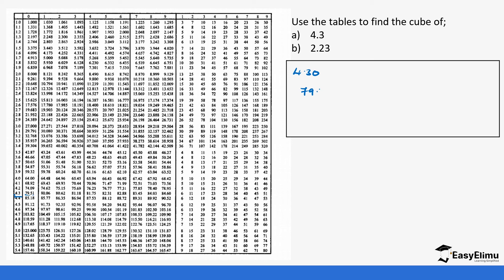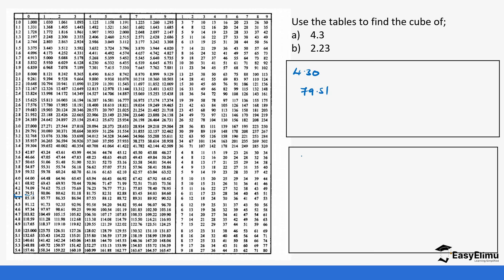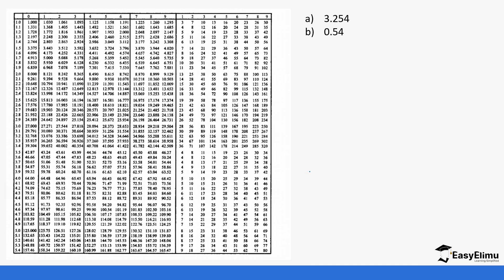For 2.23, which has more decimal places, start by going to row 2.2 in the first section. The next decimal digit is 3, so in the middle section go to column 3, then go down to row 2.2. This gives us 11.090, so our answer is 11.090.